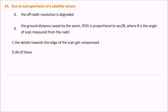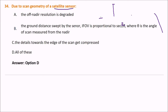Due to the scan geometry of a satellite sensor, the answer covers all of the following: the off-nadir resolution is degraded — points that are off-nadir from the satellite have degraded resolution; the ground distance swept by the sensor in the IFOV (instantaneous field of view) is proportional to sec² theta, where theta is the scan angle measured from the nadir; and details towards the edge of a scan get compressed.